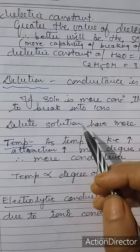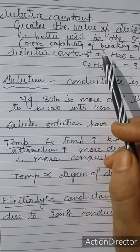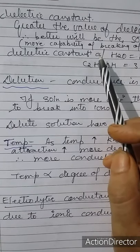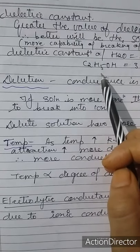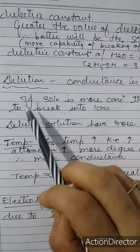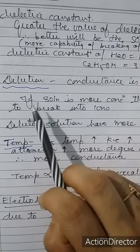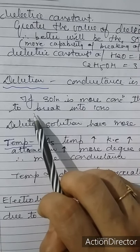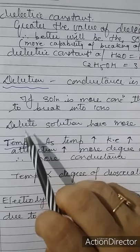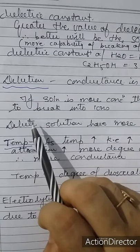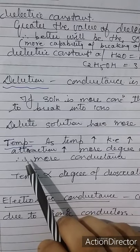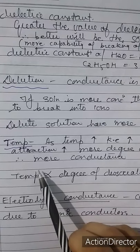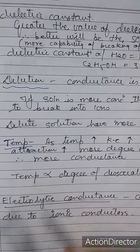If ionic bond predominates, alpha will be one — as in HCl, NaCl, and sulfuric acid. Secondly, it depends on the nature of the solvent. The capability of breaking ions depends on the dielectric constant; the greater the dielectric constant, the better the solvent's capability of breaking ions. The dielectric constant of water is 81 and that of ethanol is 35. Regarding dilution, conductance is inverse of concentration, so a more dilute solution will have more dissociation. As temperature increases, kinetic energy increases and forces of attraction increase, so more dissociation occurs — temperature is directly proportional to degree of dissociation.